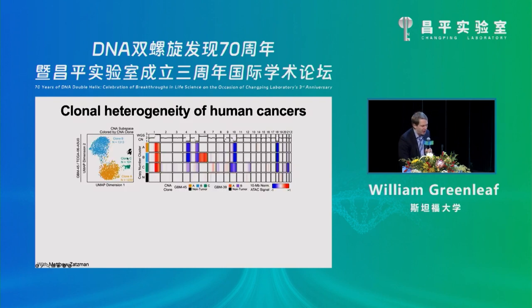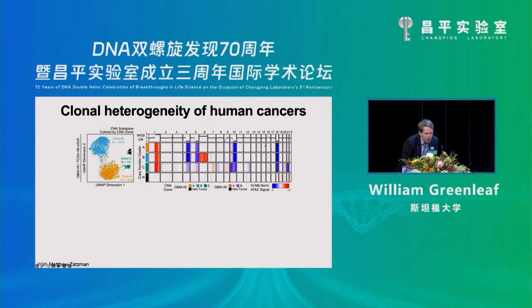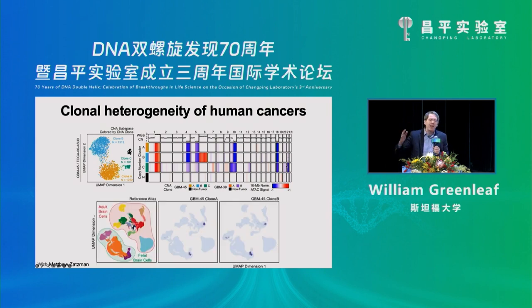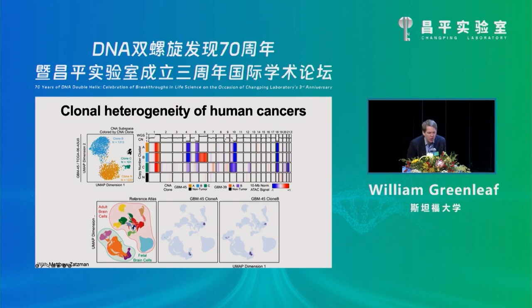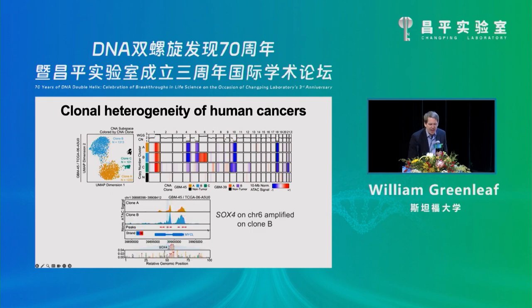You can use copy number variation to do interesting things. In this glioblastoma patient sample, we have three different clones we can identify with copy number changes — clone A, B, and C — with different deletions and amplifications across them. We can take single-cell data from fetal or adult tissue, project individual cancer cells into that manifold, and ask if cancer cells in different clones are more fetal-like or adult-like — that is, more stem-like. The different clones have very different projections, and this may be because SOX4 on chromosome 6 is amplified in clone B and may be driving this more stem-like state.